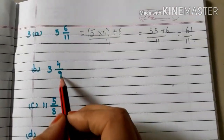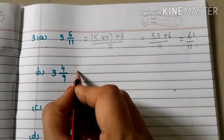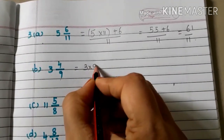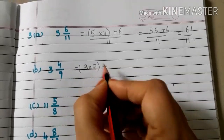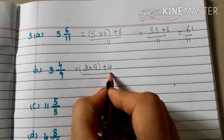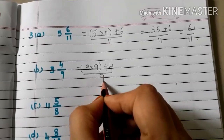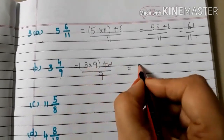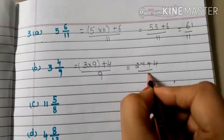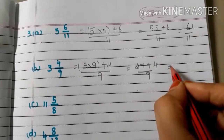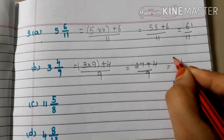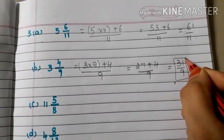B: 3 and 4/9. Whole number into denominator plus numerator, by denominator 9. 3 nines are 27, plus 4, by 9. 27 plus 4 is 31/9.